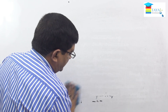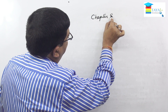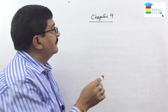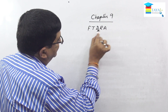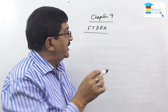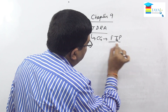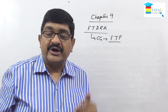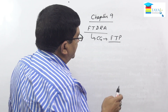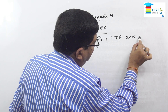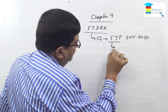Chapter nine is about the Foreign Trade Policy. It is preceded by a law called the Foreign Trade Development and Regulation Act, which authorizes the central government to make foreign trade policy. The policy is prepared for five years. The current policy was valid up to 31st March 2020 but continues to be valid. It is from 2015 to 2020 and continues to be valid in 2022 and likely in 2023 as well.